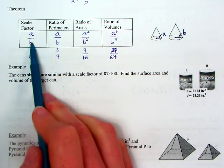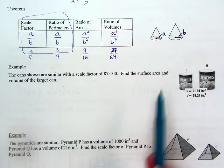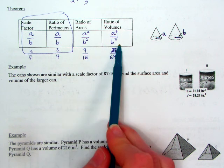So scale factor, ratio of perimeters, same thing. Ratio of areas is squared. Ratio of volumes is cubed.